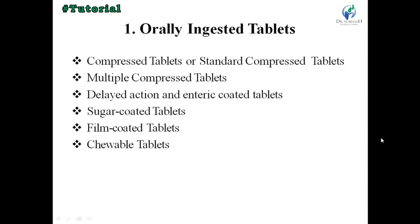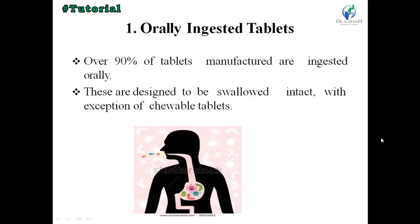Classification of tablets. The first category is orally ingested tablets, which have six subtypes: compressed or standard compressed tablets, multiple compressed tablets, delayed action and enteric coated tablets, sugar coated tablets, film coated tablets, and chewable tablets. Over 90% of tablets manufactured are ingested orally and are designed to be swallowed intact, with the exception of chewable tablets.